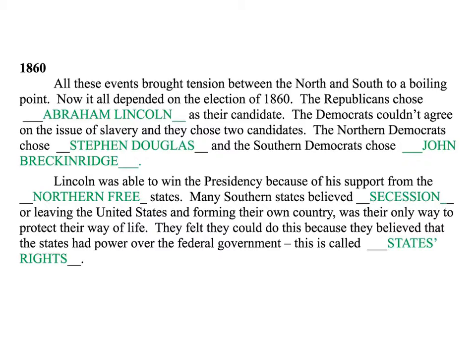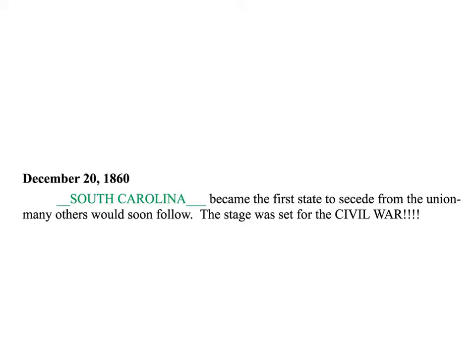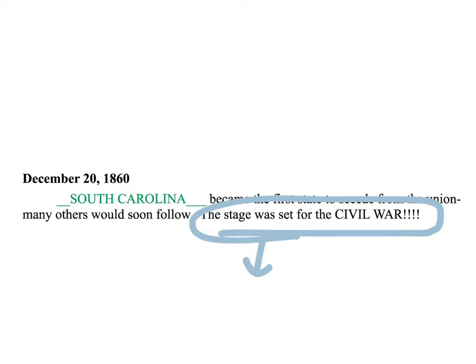We'll get into the start of the actual Civil War next time. Starting on December 20th, 1860, South Carolina became the first state to secede from the Union, setting the stage for the Civil War. When we talk next time, Abraham Lincoln had a choice: either let South Carolina and the other states go and become their own country, or fight to keep the country together and also fight to end slavery. Good job — keep studying your notes. Have a great day.